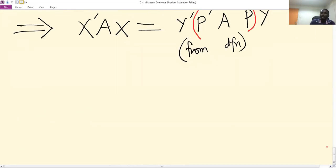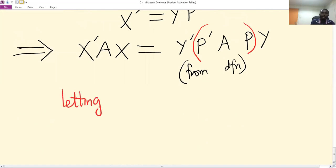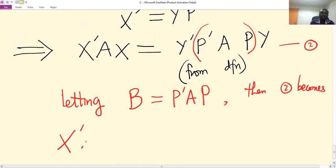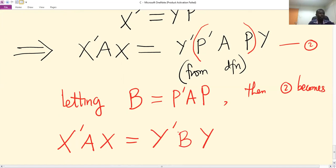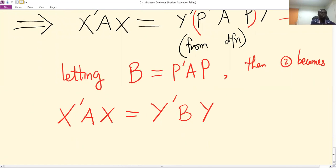In this new equation, if we put brackets here and let B = P'AP, then equation 2 becomes x'Ax = y'By.